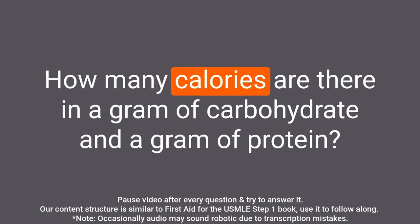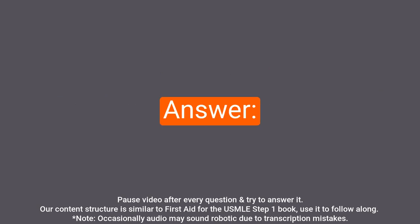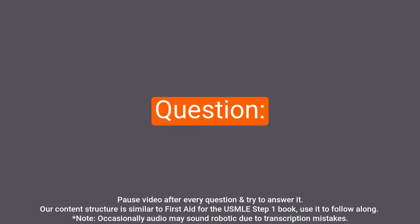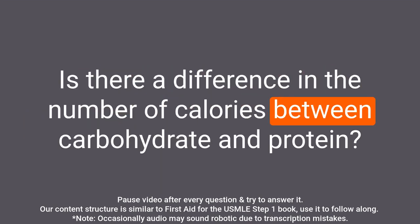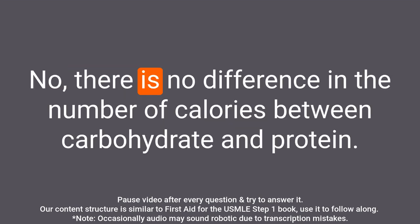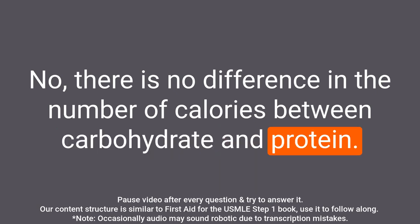Question: How many calories are there in a gram of carbohydrate and a gram of protein? Answer: There are four kcal in a gram of both carbohydrate and protein. There is no difference in the number of calories between carbohydrate and protein — both contain 4 kcal per gram.